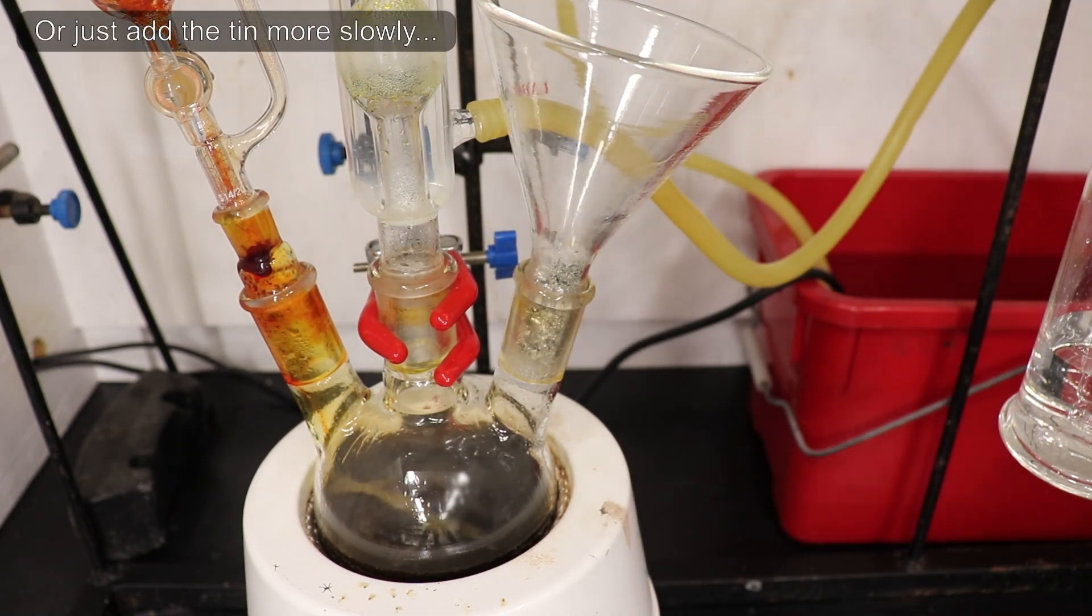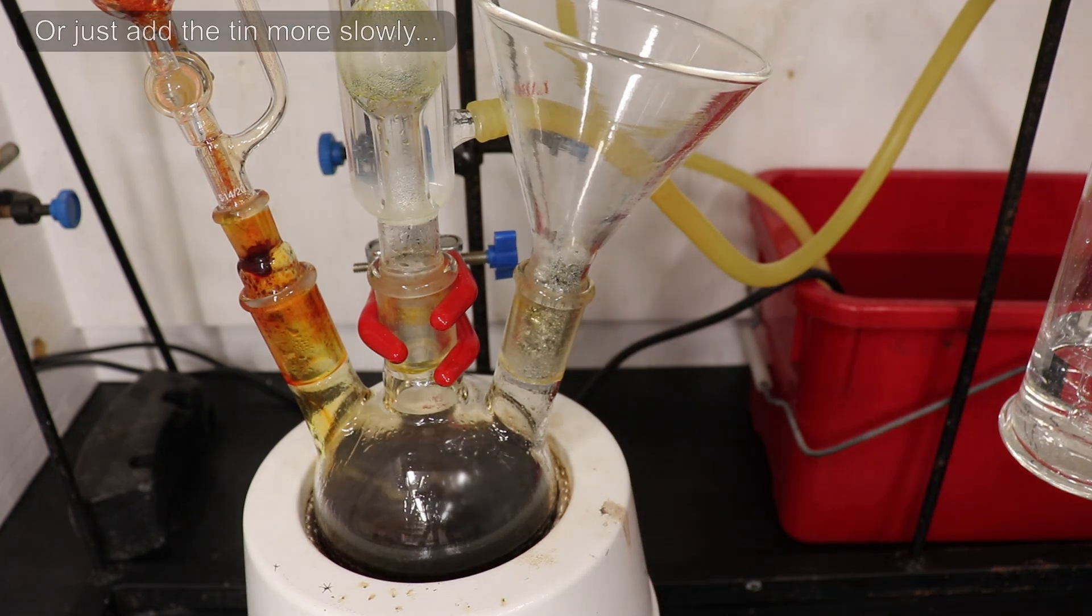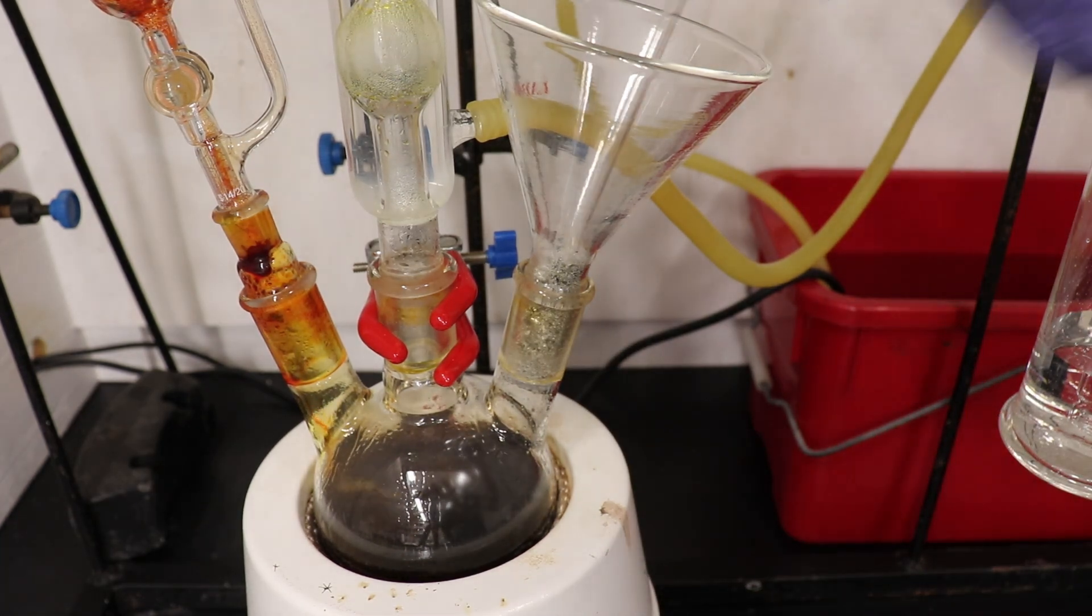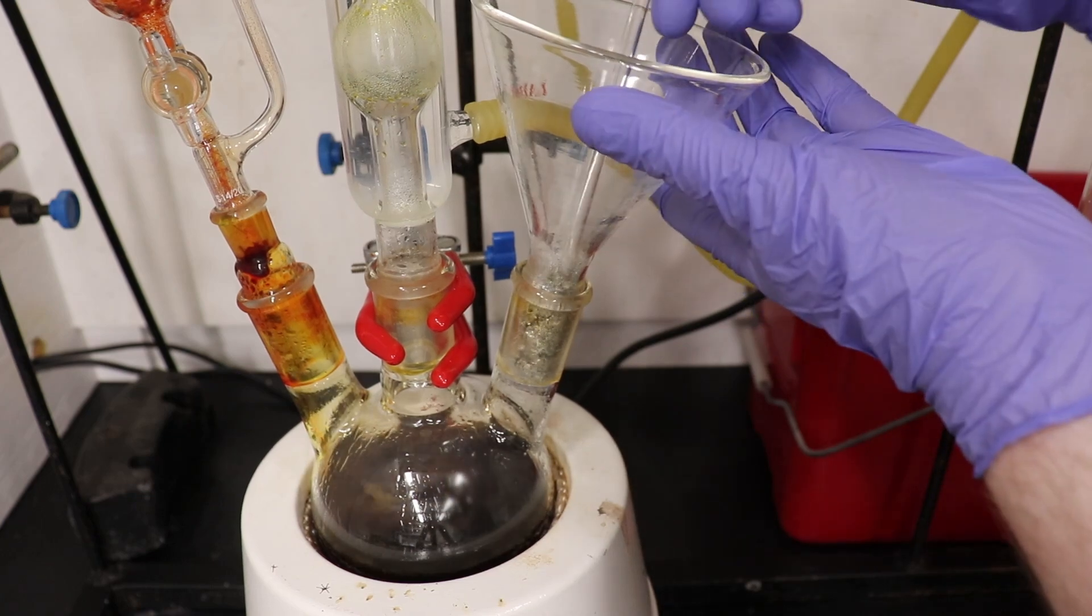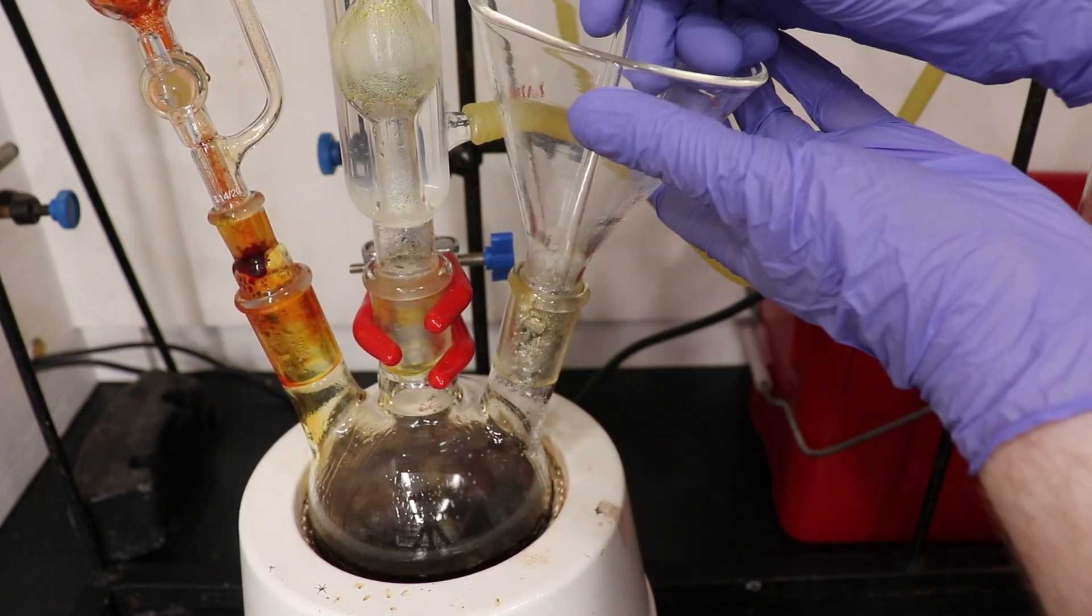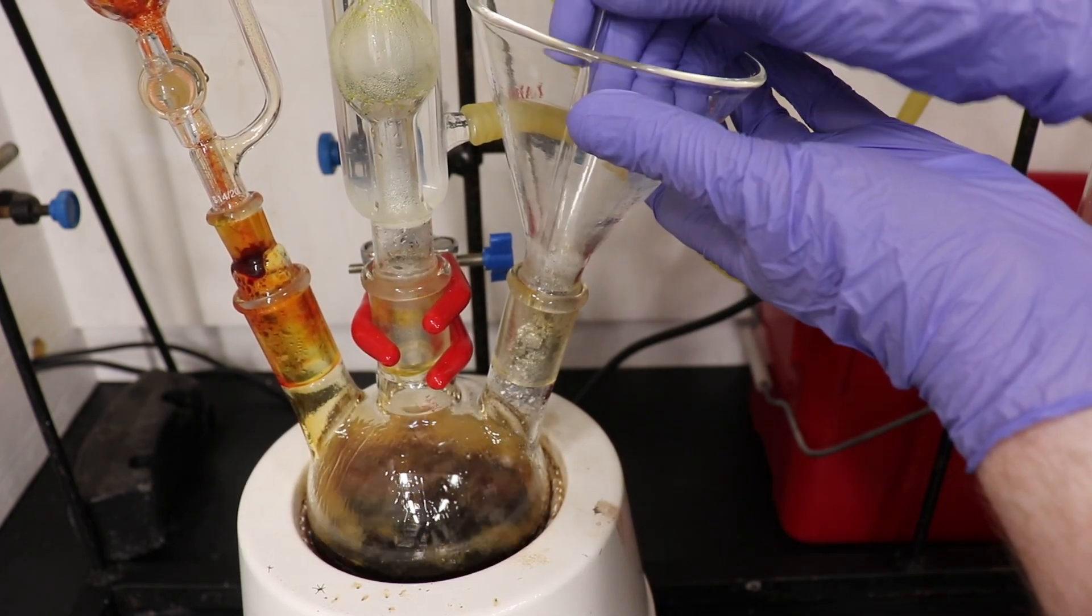In this scenario, I should have just removed the funnel and re-stoppered the flask. However, you can see me struggling to push down the tin. I eventually succeeded, but you can see the flask really starting to boil. In the end, I managed to get away with it.